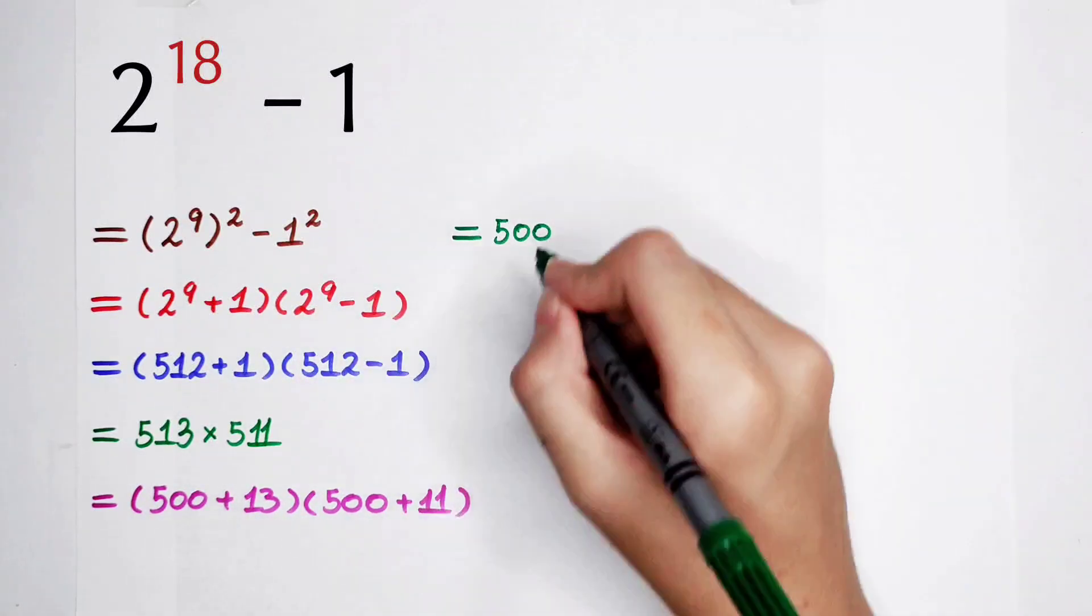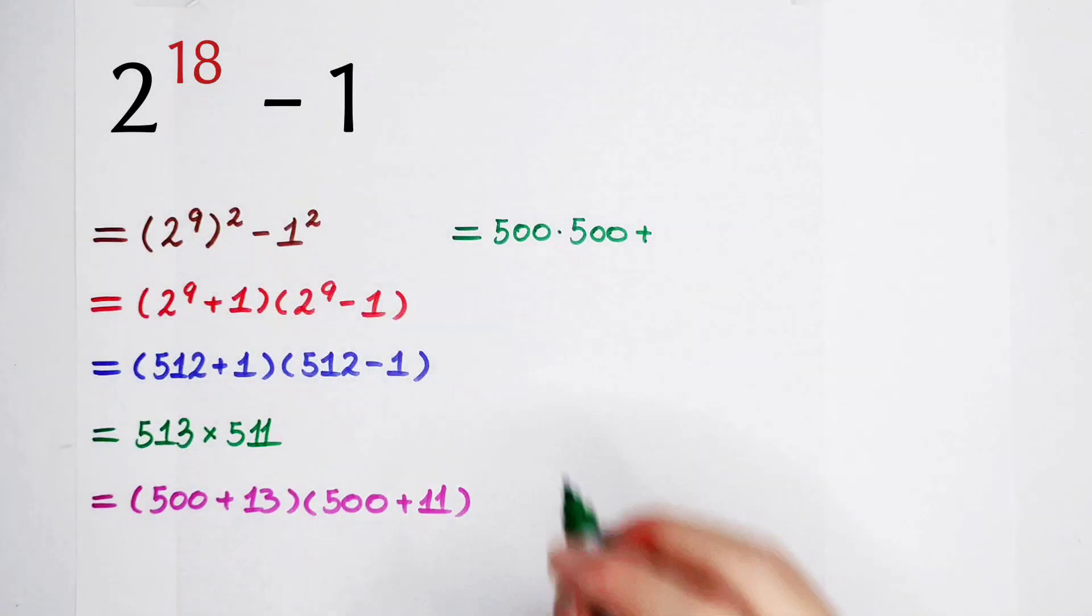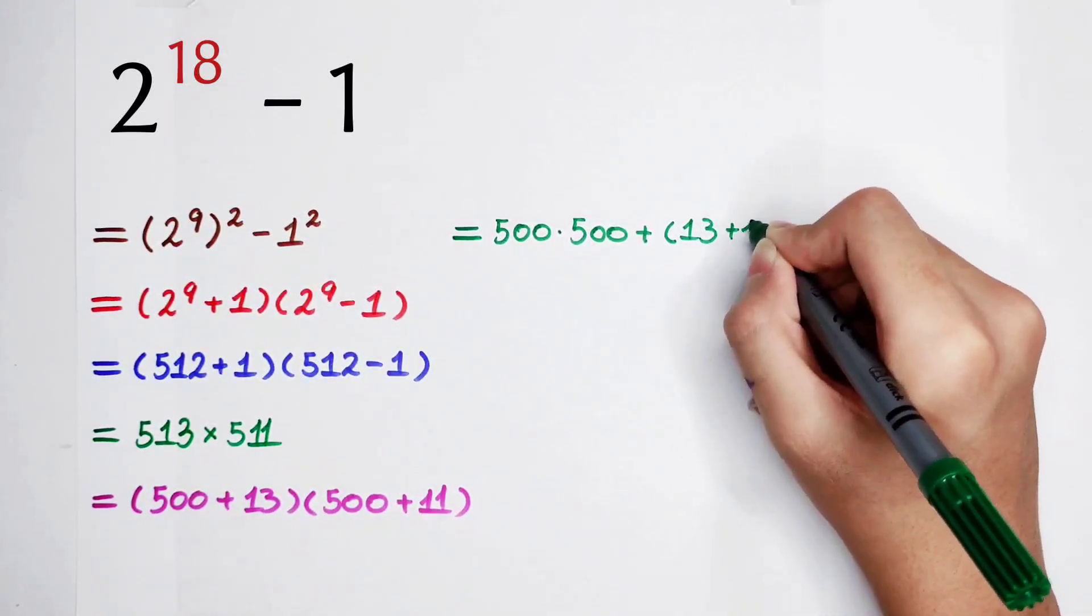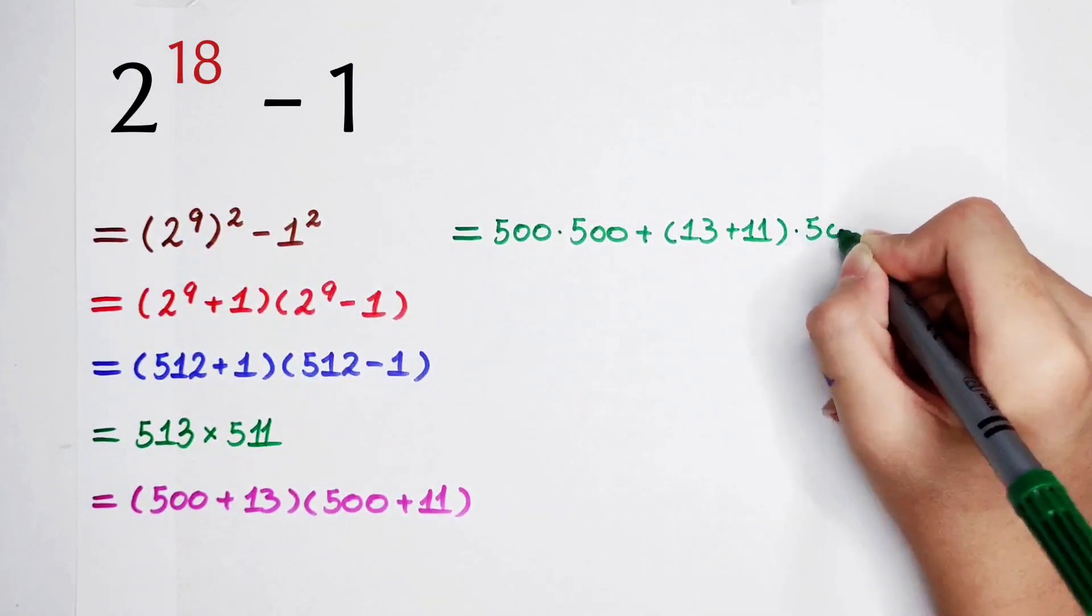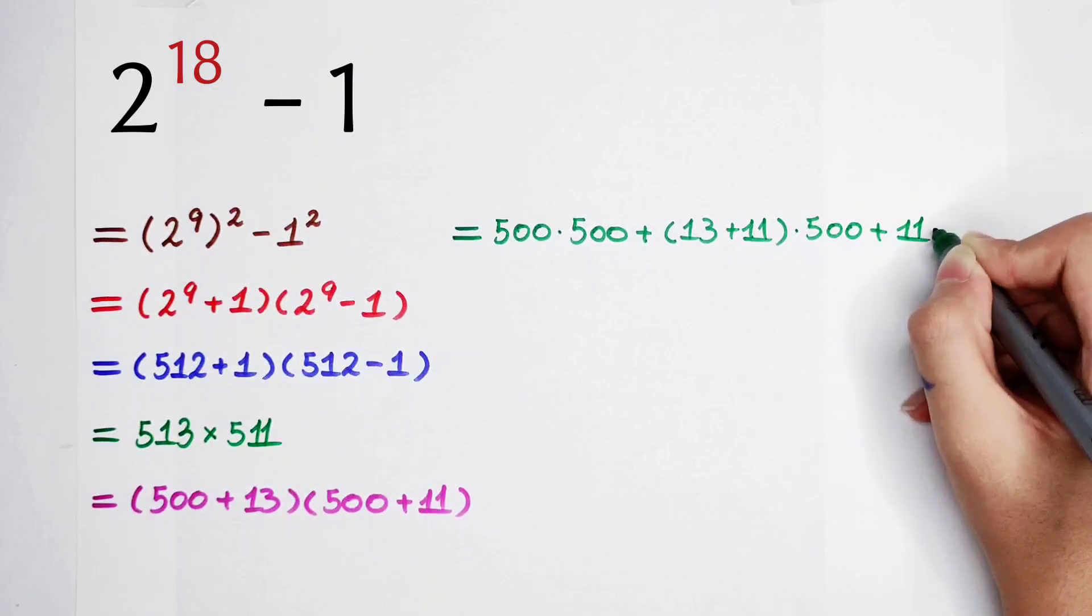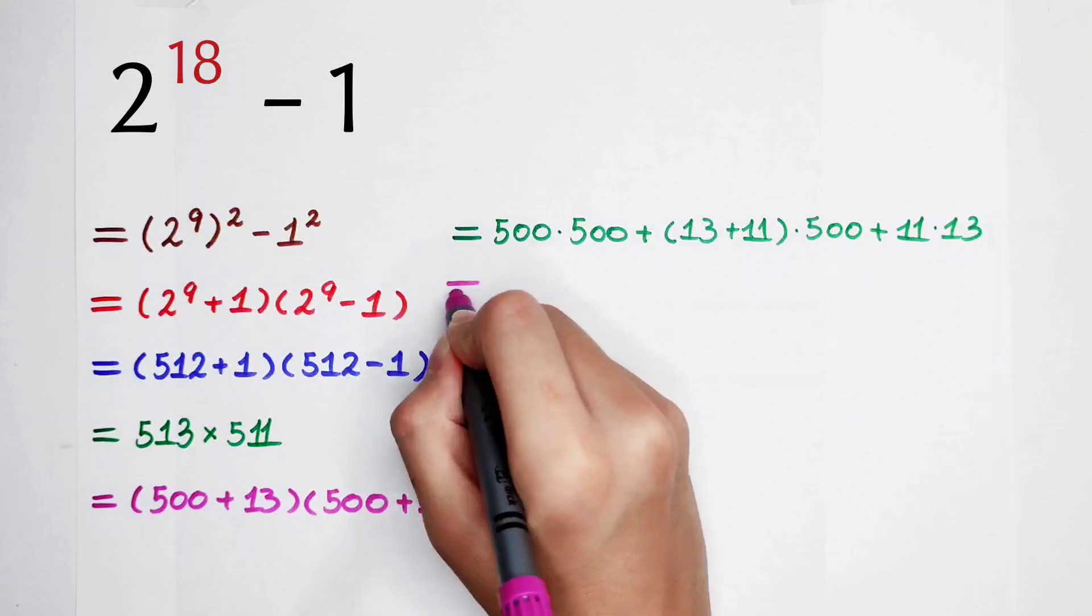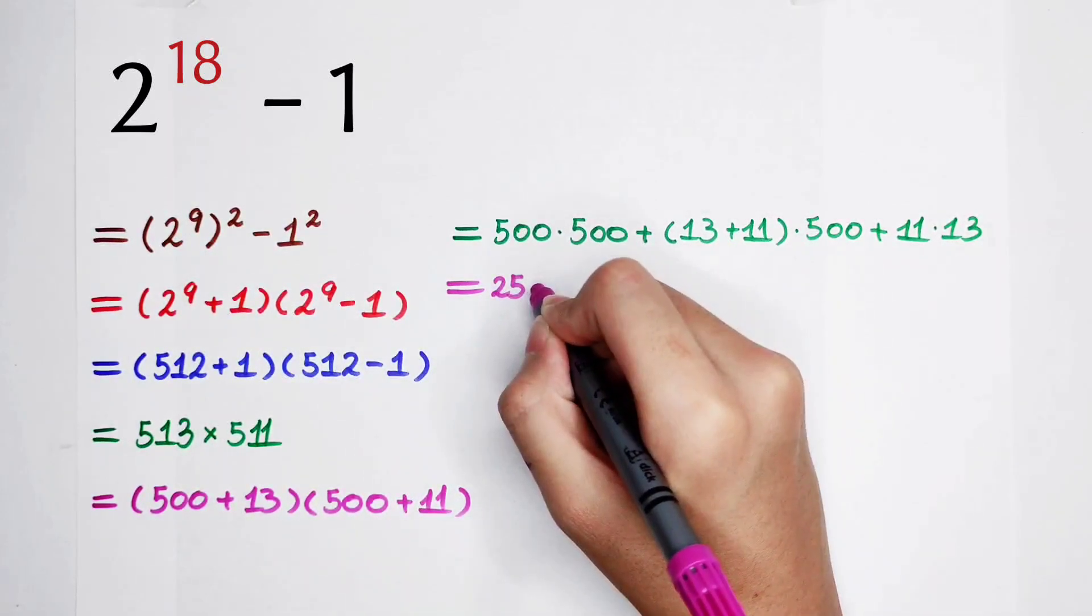500 times 500 plus 13, plus 11 with bracket, then times 500, and then plus 11, then times 13. It is very easy to calculate it, isn't it?